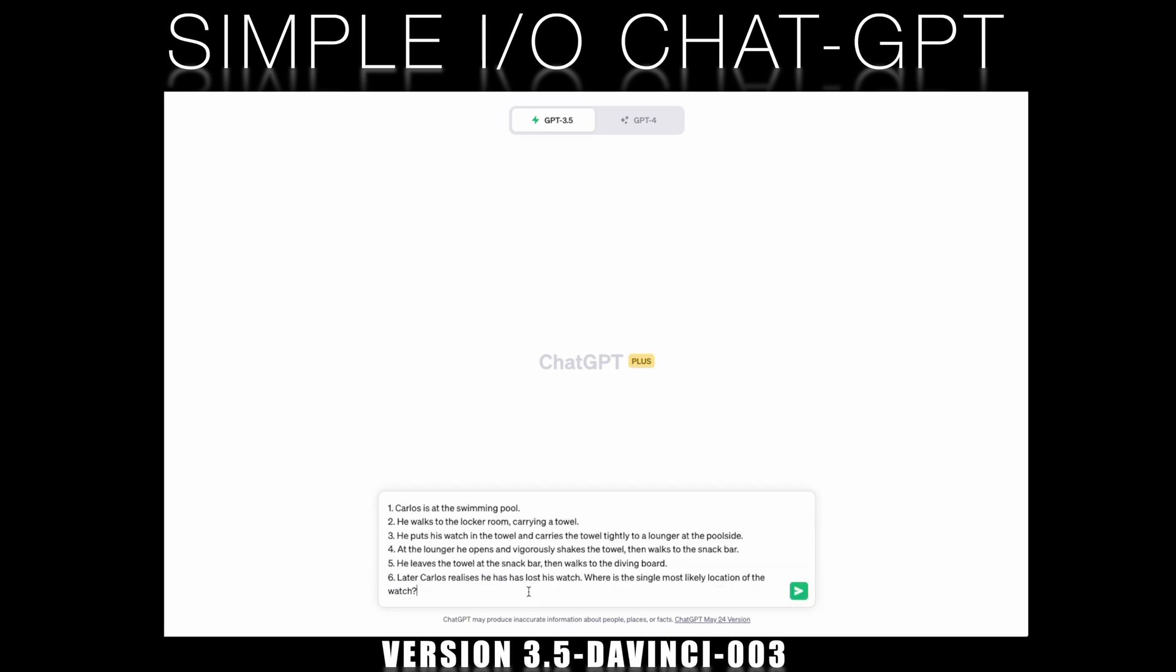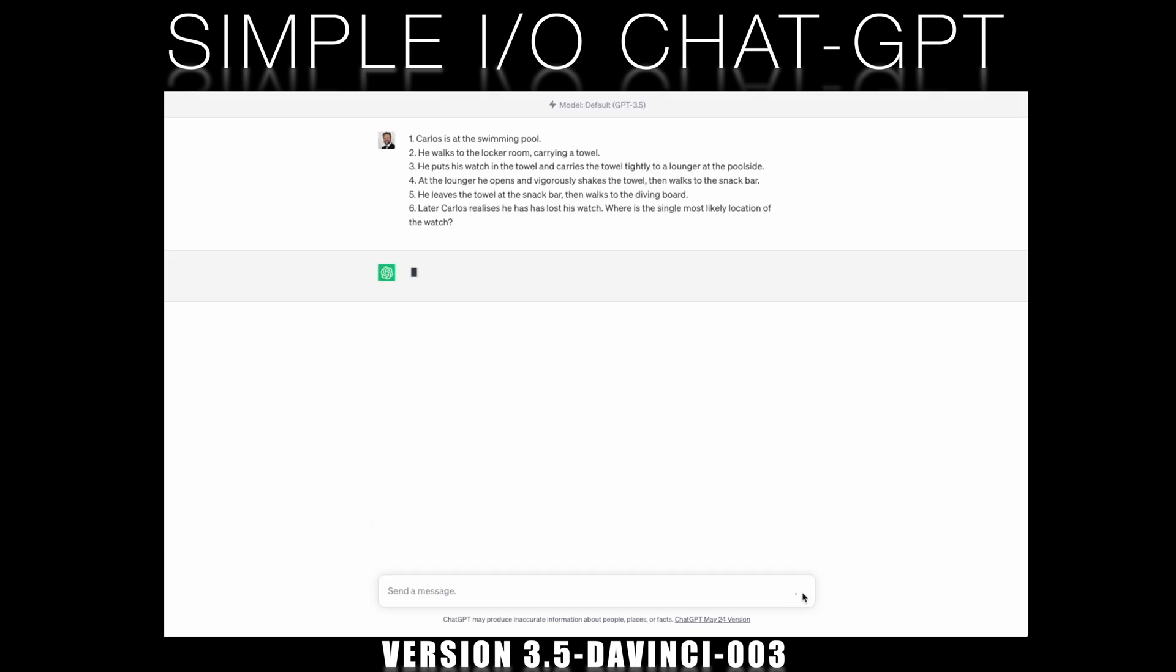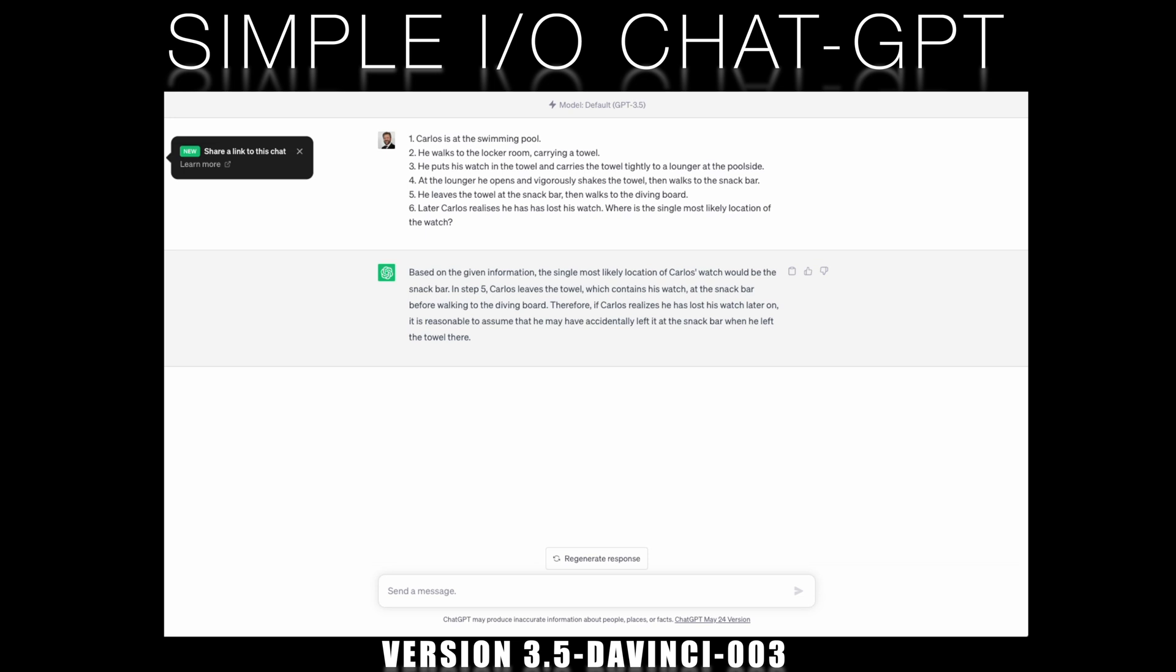Let's try out ChatGPT on this problem. If we treat this as a simple I.O. problem then ChatGPT, at least the 3.5 DaVinci 3 model, pretty much always says it's at the snack bar. This is where he left the towel. Try it yourself using ChatGPT.